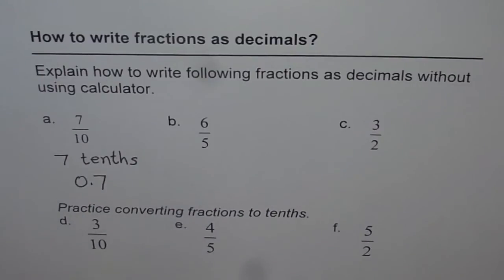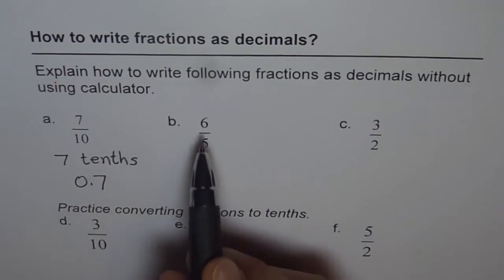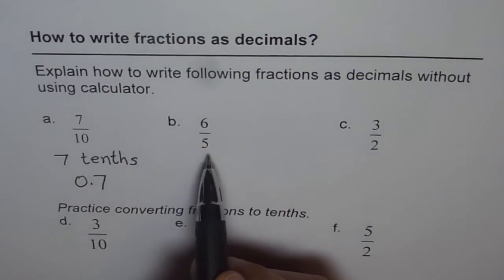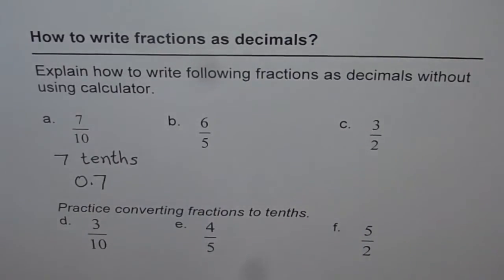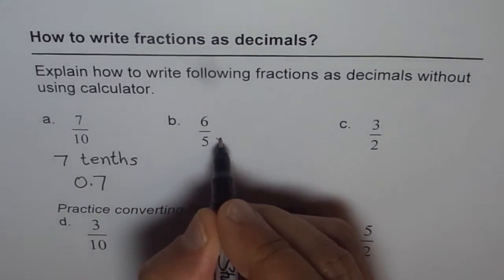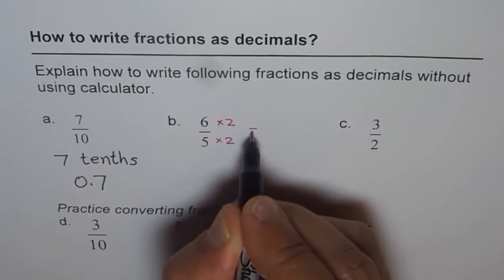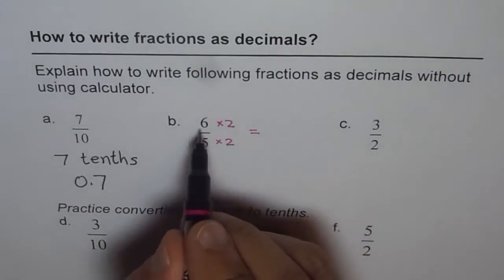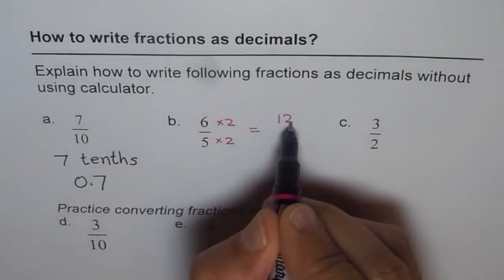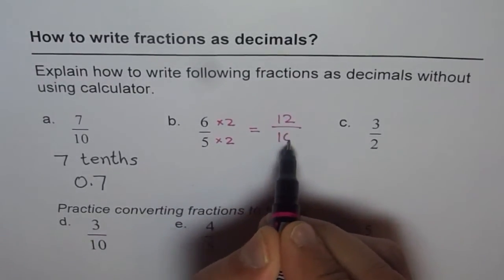Let's move on to 6 over 5. Can you write this as tenths? 5 times what is 10? This is what you have to think. 5 times 2 is 10. Let's multiply both by 2 and write equivalent fractions. So we get 6 times 2 as 12 and 5 times 2 as 10.